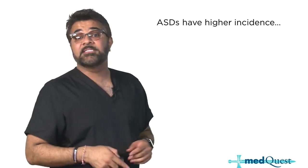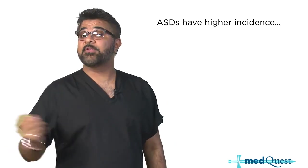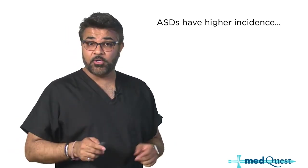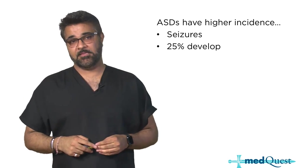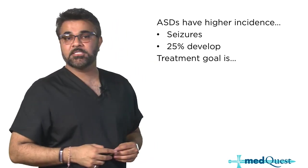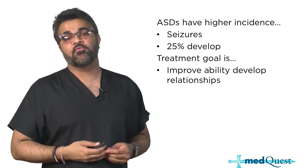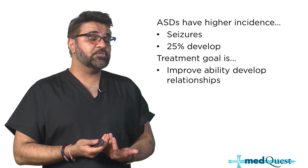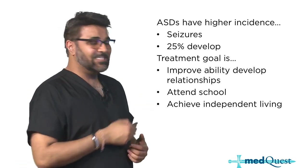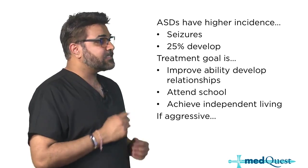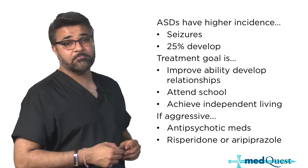What do autism spectrum disorder patients have a higher incidence of? The answer is seizures. In fact, 25% of them develop seizures. The treatment goal for patients with autism spectrum disorders is to improve their relationships and their ability to develop relationships, teach them coping mechanisms to attend school, and do their ADLs and achieve independent living. However, if they have aggressive tendencies with autism spectrum disorder, antipsychotic meds are started, like risperidone or aripiprazole.